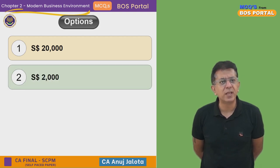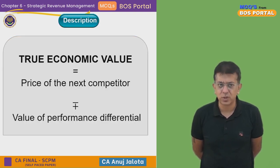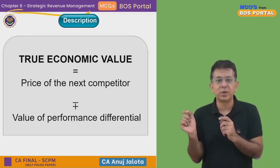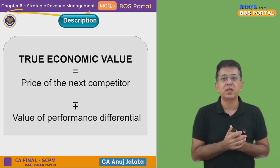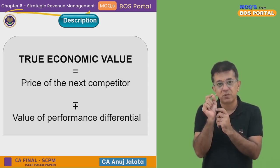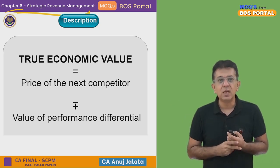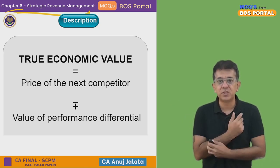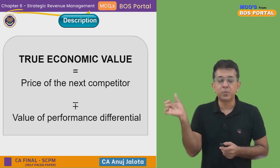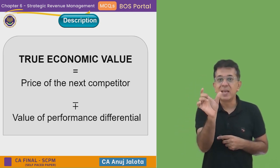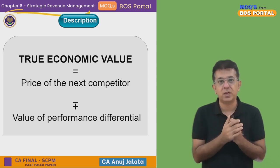The four options given are twenty thousand, two thousand, twenty-three thousand, and twenty-two thousand. What do we mean by True Economic Value (TEV)? When arriving at the price of your product, you take the price of the next best competitor and then assess the difference between your product features and competitor product features from the customer's angle, and adjust that to arrive at the price of your product.